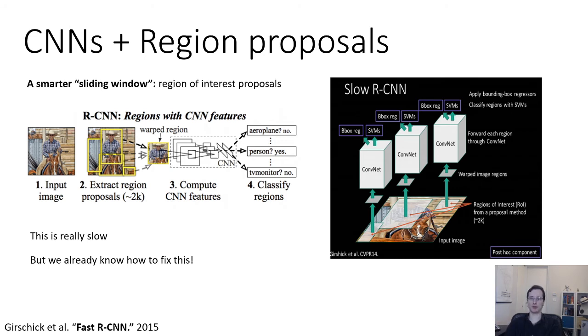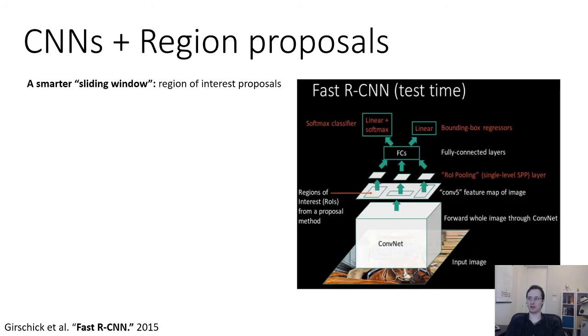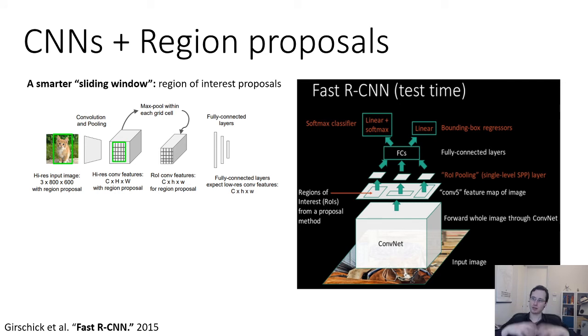So a much better approach is to use something that we've already learned about when we talked about sharing convolutional features at different locations, when we talked about overfeat. So instead of actually running each region independently through a convolutional network, what you can do instead is you can have one convolutional network process the entire image and produce a convolutional response map. And then you can take your region of interest proposals and you can project them not into the image, but into the convolutional map. So your conv layers produce a response map, which you can think of as basically like an image, but it contains features. And then you take your region of interest, put it into that convolutional response map, and then you take all of the features inside that region and you pool them together. In their case, they use max pooling. And then you get just a vector describing that region, which you feed into some fully connected layers, and those fully connected layers will produce a class and a bounding box.